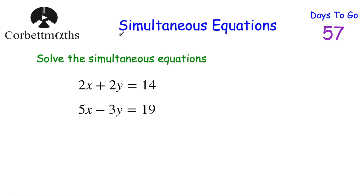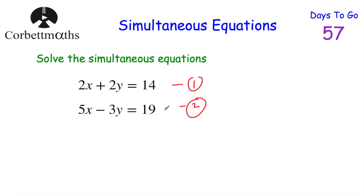Here's one for you to try — feel free to press pause and try the simultaneous equations question now. If I was solving this, I'd call the equations 1 and 2. We've got 2x and 5x, so you could multiply the top equation by 5 and the bottom by 2 to get 10x and 10x. Alternatively, multiply the top equation by 3 to get 6y, and the bottom by 2 to get minus 6y — and minus 6y plus 6y would be 0.